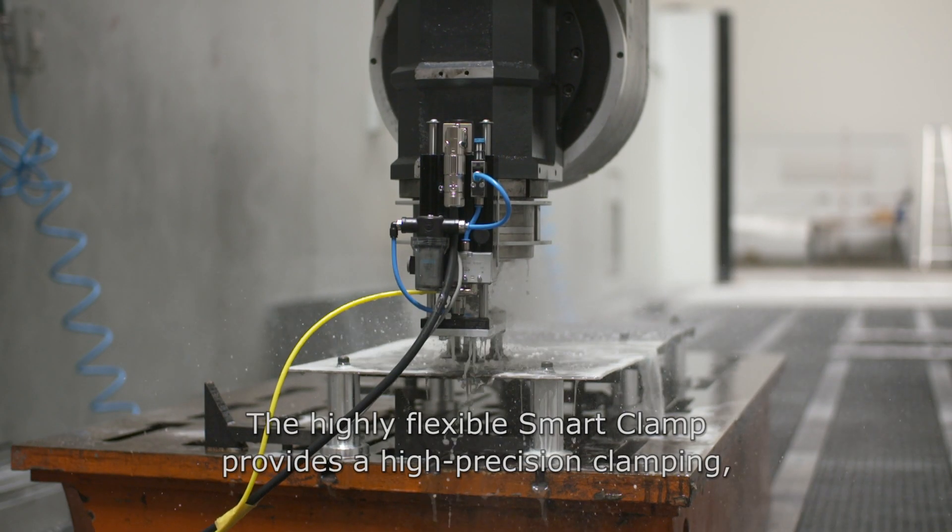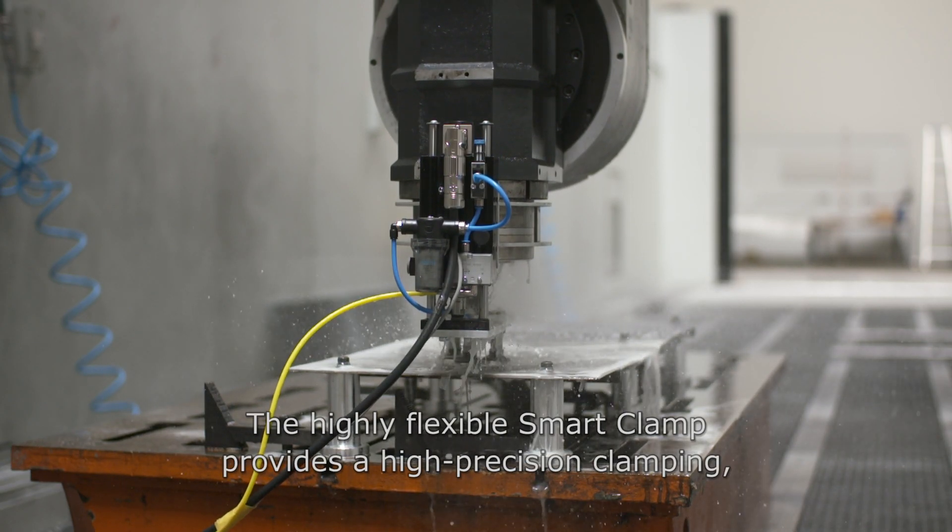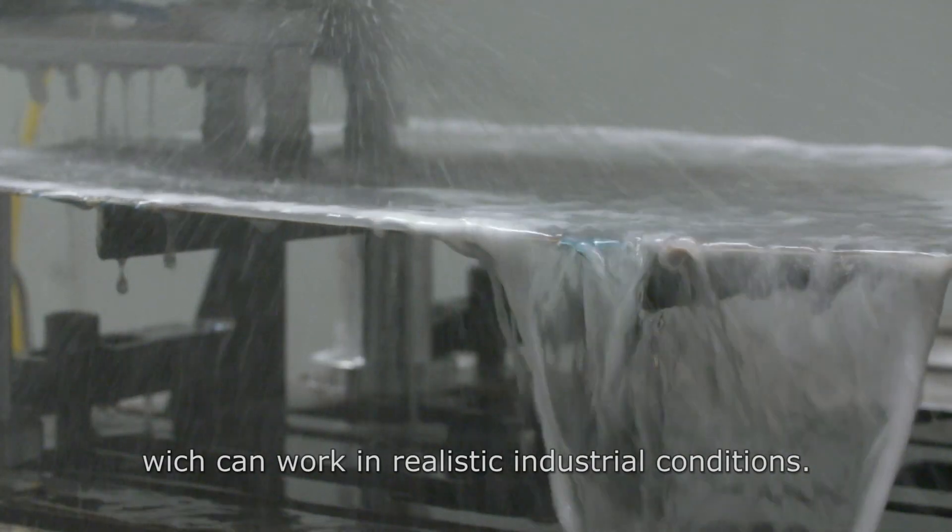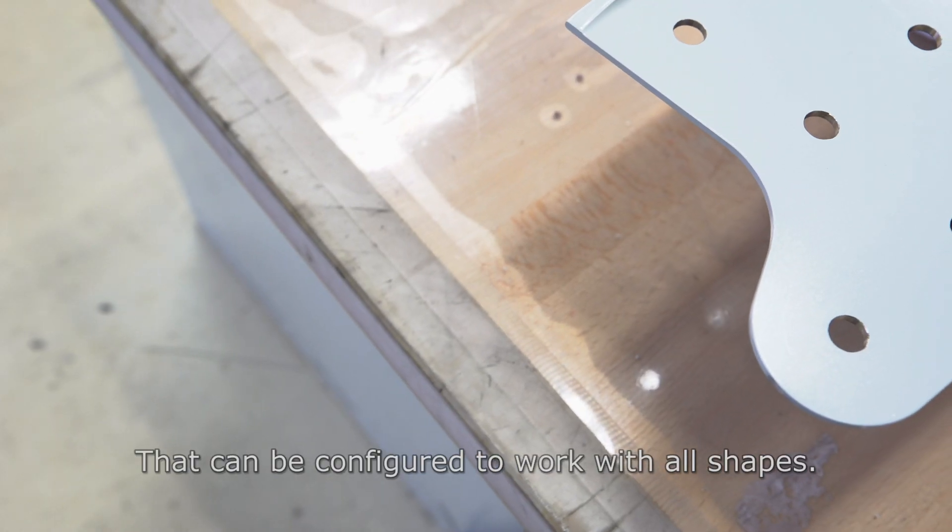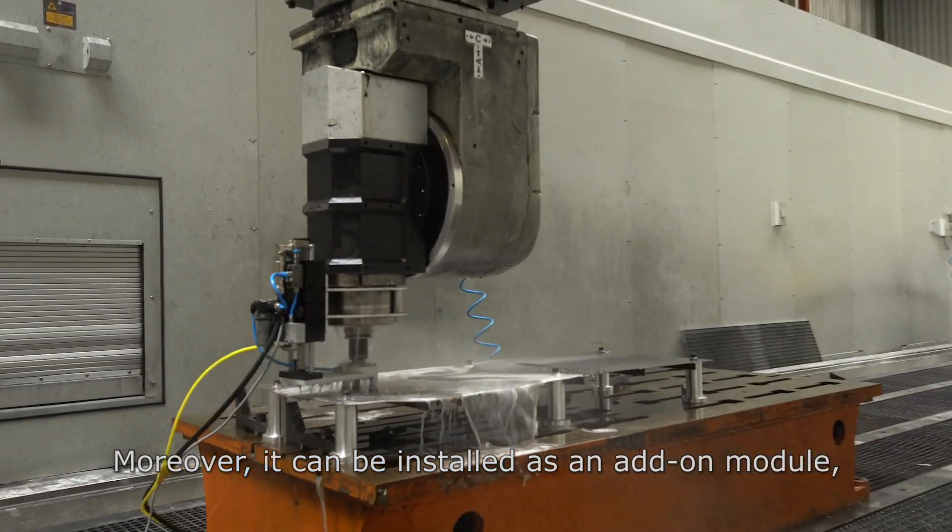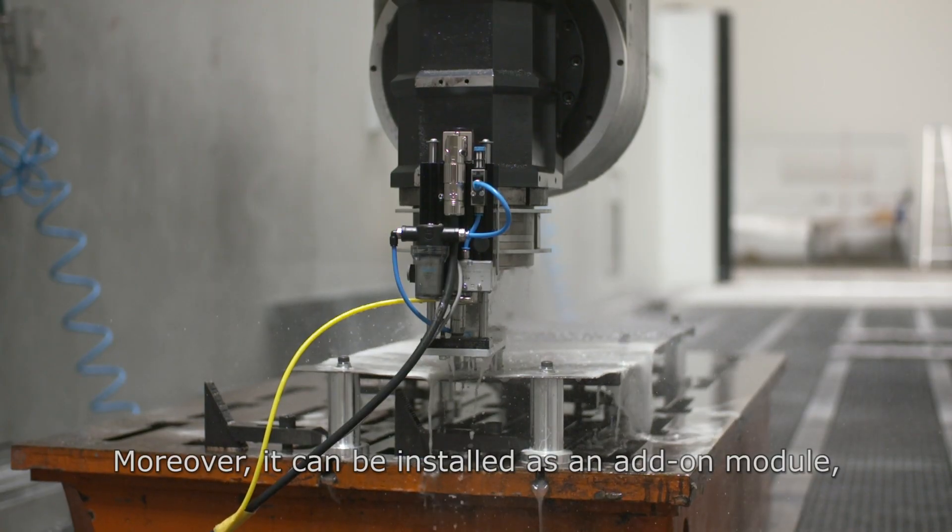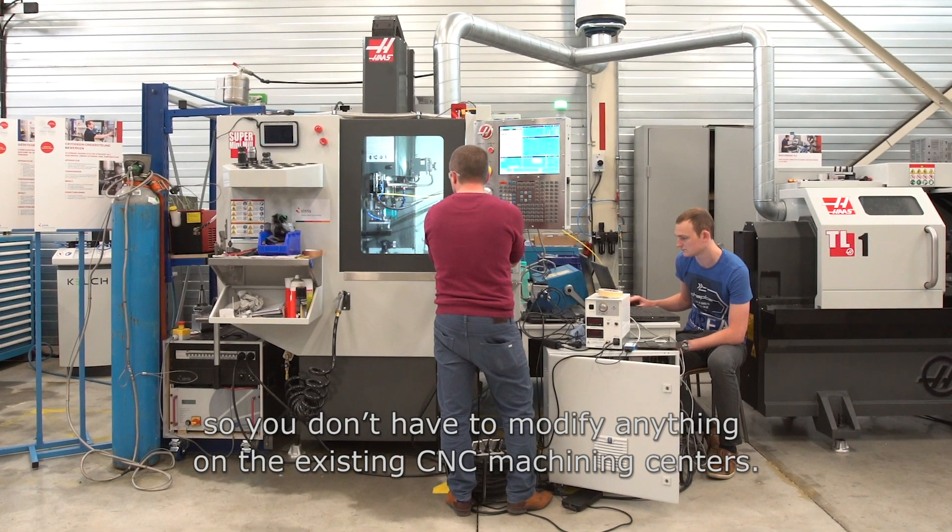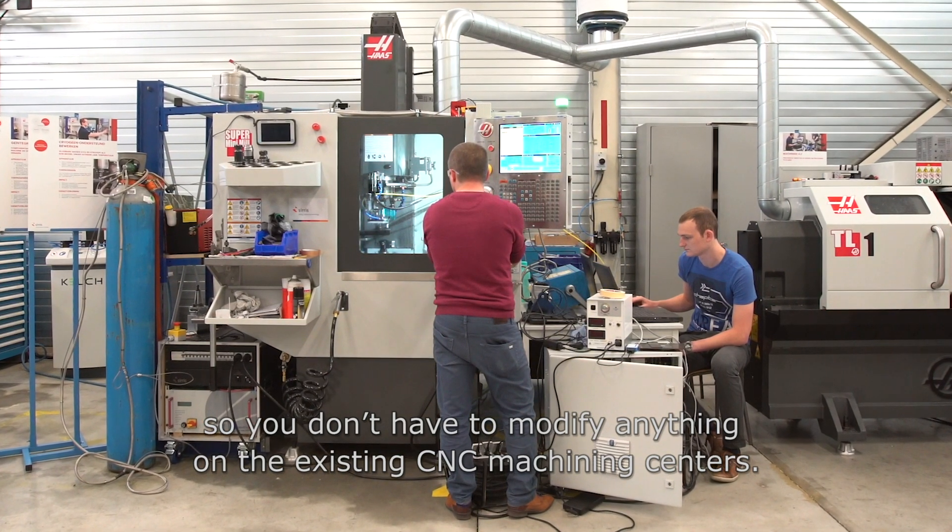The highly flexible smart clamp provides high precision clamping which can work in realistic industrial conditions and can be configured to work with all shapes. Moreover, it can be installed as an add-on module, so you don't have to modify anything on the existing CNC machining centers.